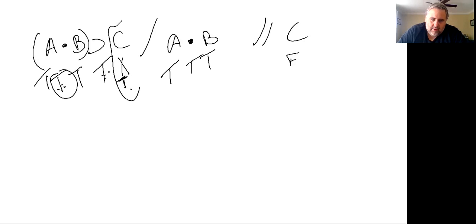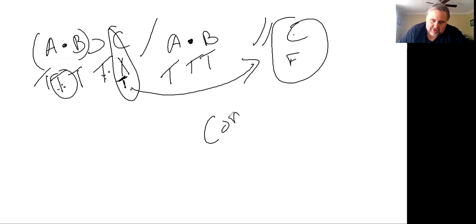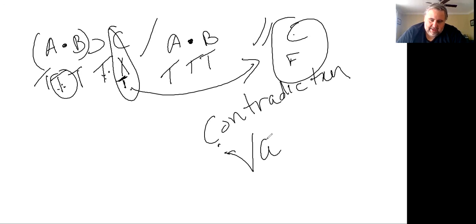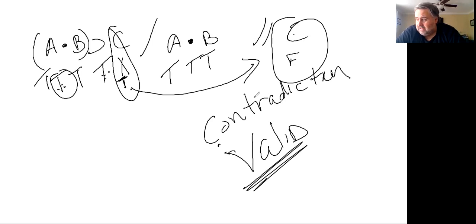But C has to be false, because it's already labeled as false over here as part of the conclusion. Therefore, you have a contradiction. When you find a contradiction, you have to conclude that the argument is in fact valid — you couldn't make it work where you had true premises and a false conclusion. So it's not invalid, but valid. It's a little weird, because when you find a contradiction, you find validity. It's only when you don't find a contradiction — when it works — that it's invalid.